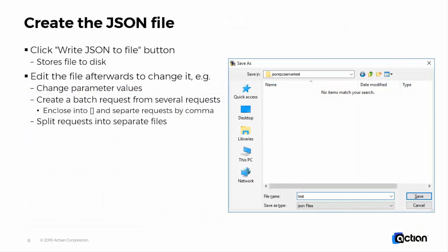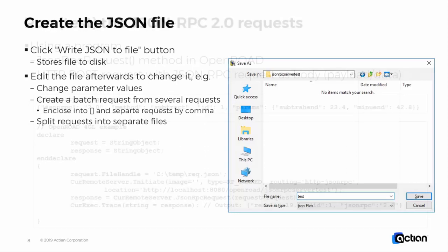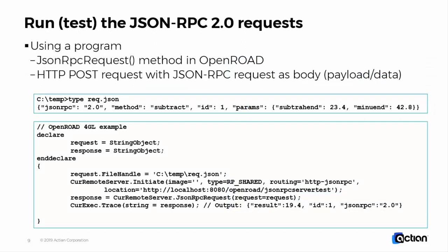By clicking on the 'Write JSON to file' button, you can store the JSON to a disk file, which you can then edit afterwards to change parameter values, or create a batch request from several requests, or you can split the requests into separate files.